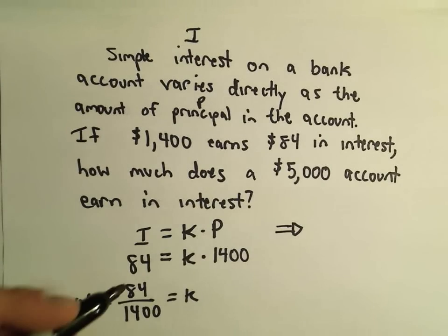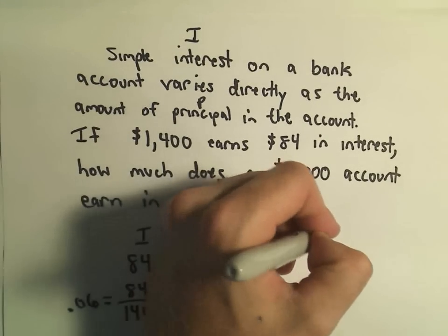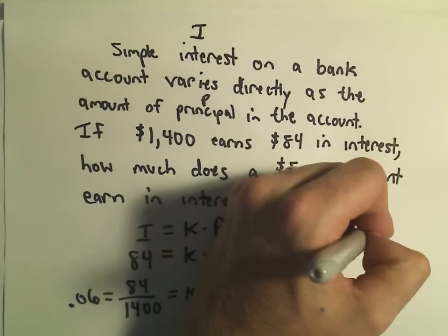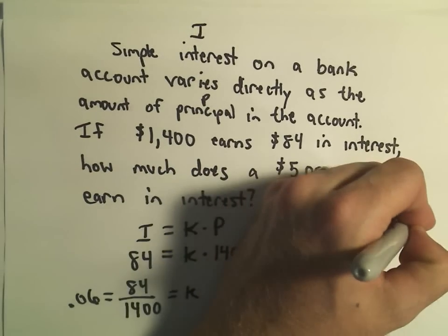So really it says the equation we should be using is I equals K, which is .06, times the principal.